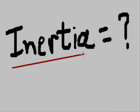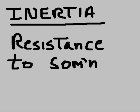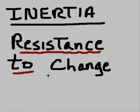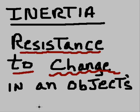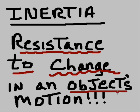Your next question should be: what is inertia? So we need a definition for inertia. Inertia is resistance to change — specifically, it is resistance to change in an object's motion.